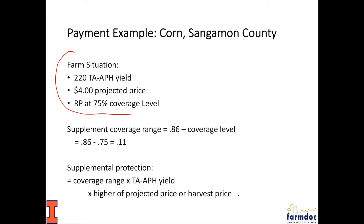Our farm situation is a 220 APH yield, trend adjusted, which we're going to use to calculate our guarantee. We'll use a 2019 projected price of $4 and assume a 75% coverage level. The supplemental coverage range runs from 0.86 down to the coverage level — 0.11 in our case, that's 0.86 minus 0.75 — which is the range on which SCO would pay.